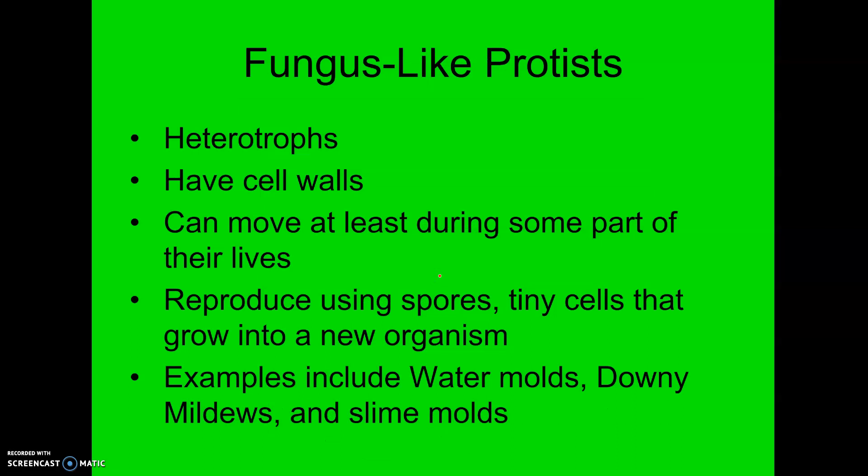That brings us to the last group: fungus-like protists. Fungus-like protists are heterotrophic — they cannot make their own food. They have cell walls. They all have the ability to move at some point in their lives and they reproduce with something called spores. Examples are kind of weird: water molds, downy molds, slime molds. I'm going to show you a quick video of them right now so you can see what they look like.